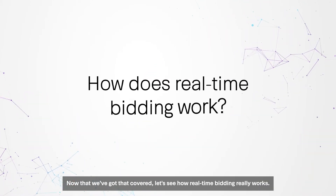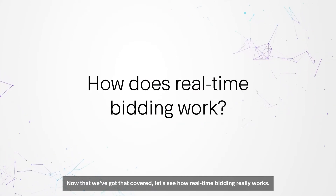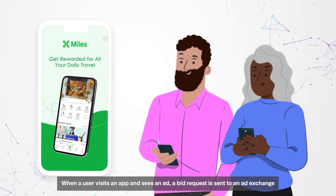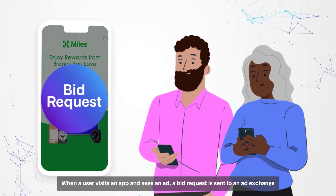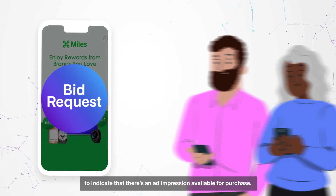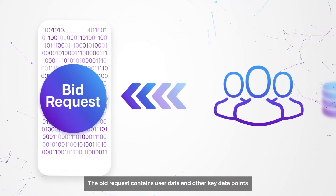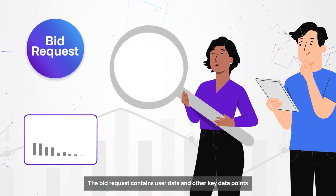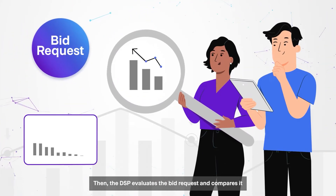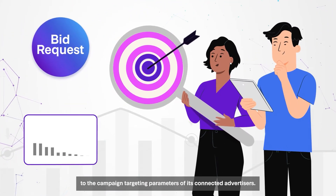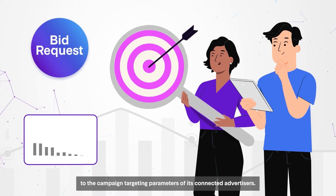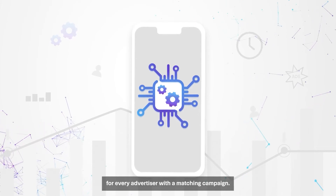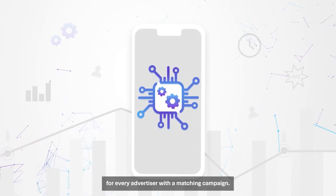Now that we've got that covered, let's see how real-time bidding really works. When a user visits an app and sees an ad, a bid request is sent to an ad exchange to indicate that there's an ad impression available for purchase. The bid request contains user data and other key data points. Then the DSP evaluates the bid request and compares it to the campaign targeting parameters of its connected advertisers.